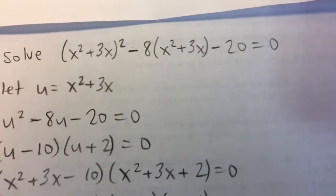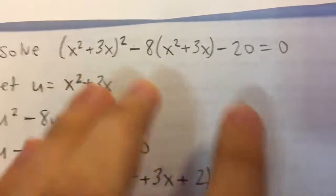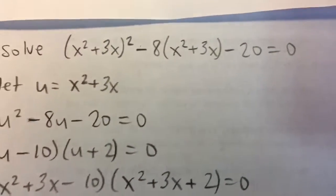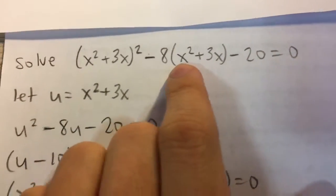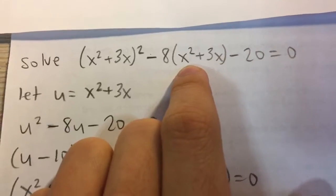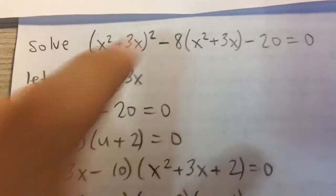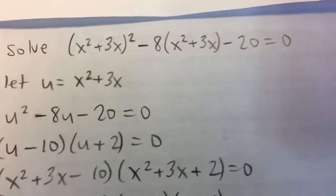You might think we can multiply it out and use some other techniques to solve this equation, but an easier way is just to recognize that here we have an expression x²+3x, and here we have that same expression squared.